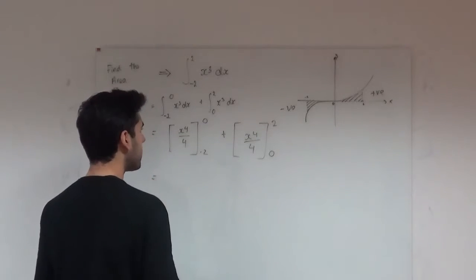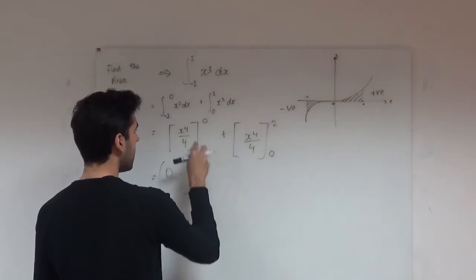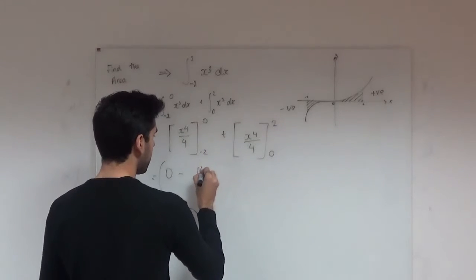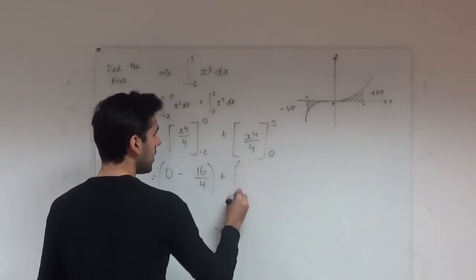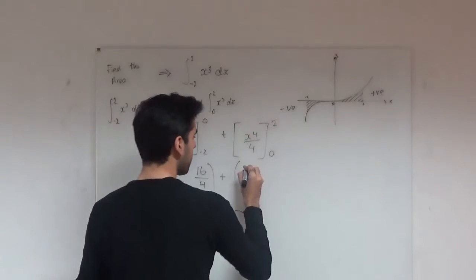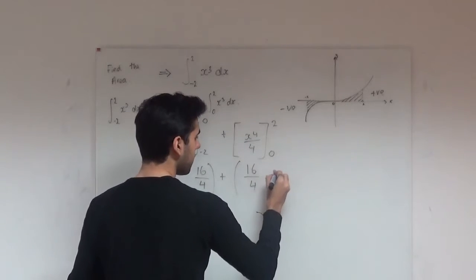Now evaluating this, putting 0 in, we get 0 minus, minus 2 to the 4 is 16 so we have 16 all over 4, and we add on, we put in 2 over here, we get 16 over 4, putting 0 into here, we get 0.